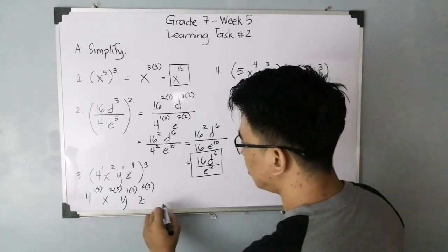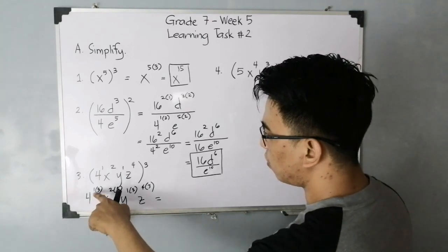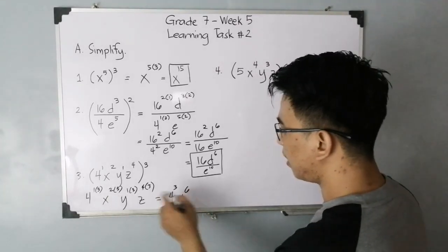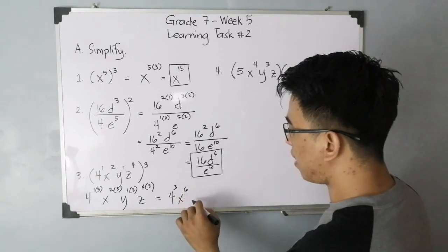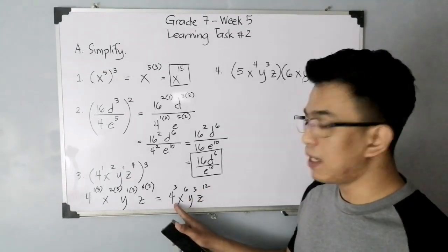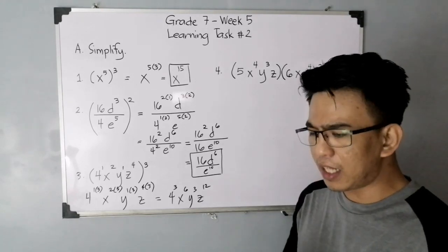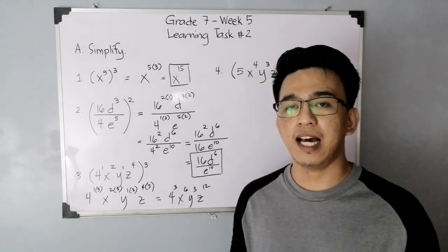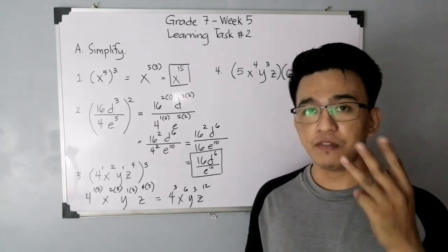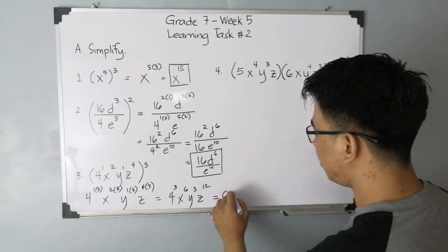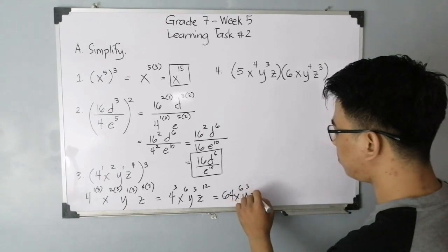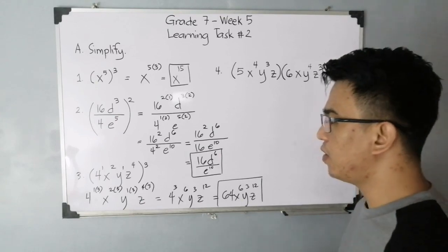And simplifying your exponents, you have 4 raised to 1 times 3, that is 4 raised to 3. Next, you have your x raised to 6, because 2 times 3. For the variable y, y raised to 3. And then your z is raised to 12. But are we done? We can still simplify the 4 raised to 3. The exponent tells us how many times we need to multiply the base by itself. So that is 4 times 4, that is 16, times 4, that will give you 64 x raised to 6 y raised to 3 z raised to 12. This is the correct answer for item number 3.